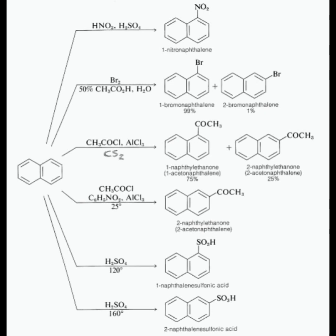Naphthalene treated with acetyl chloride in presence of nitrobenzene and aluminium chloride at a temperature of 25 degrees Celsius gives only 2-acetylnaphthalene.